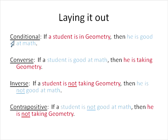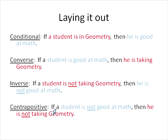Let's do a quick recap of everything. A conditional statement says 'if hypothesis, then conclusion' — for example, if a student is in geometry, then he is going to math class. The converse switches hypothesis and conclusion: if a student is good at math, then he is taking geometry — not always true. The inverse negates both: if a student is not taking geometry, then he is not good at math — also not necessarily true. The contrapositive both switches and negates: if a student is not good at math, then he is not taking geometry. If the conditional statement is true, the contrapositive is also true — that's with the colors back in for review.